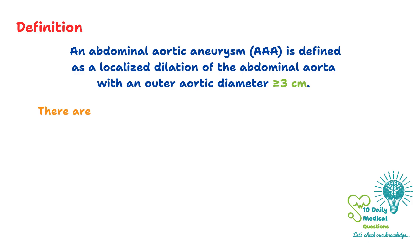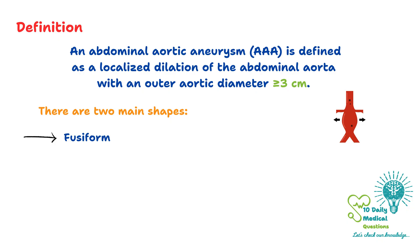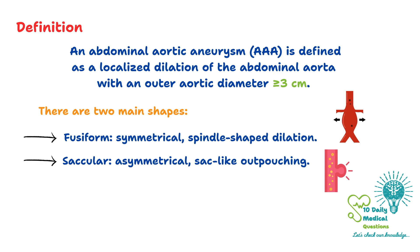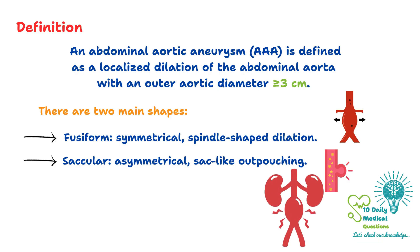There are two main morphological types: fusiform aneurysms, which are symmetrical and spindle-shaped, and saccular aneurysms, which are more pouch-like outpouchings.